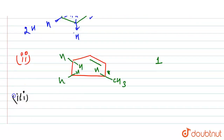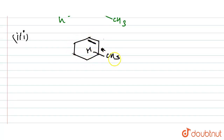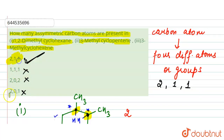For 3-methylcyclohexene, the double bond is at position 1, and the methyl group is at position 3. Similar to the previous case, carbons on the double bond are not chiral. Only carbon 3 is chiral — it has one hydrogen, one CH3, and two different ring chain portions. So 3-methylcyclohexene also has one chiral center. The final sequence is 2, 1, 1 — option number one is the correct answer.